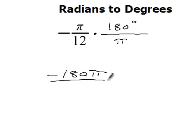Negative 180 pi over 12 pi. What happens to pi? What's pi divided by pi? 1, right? And what's 180 divided by 12? 15. So you get negative 15 degrees.